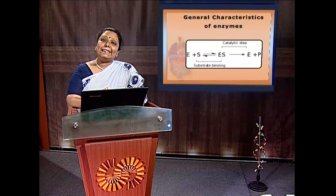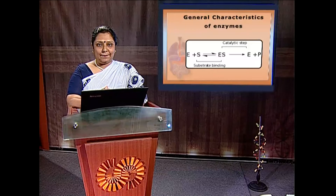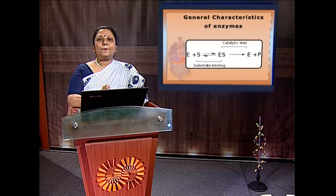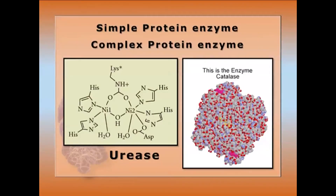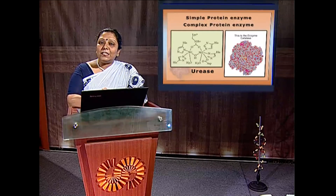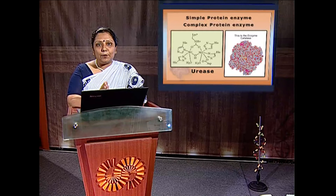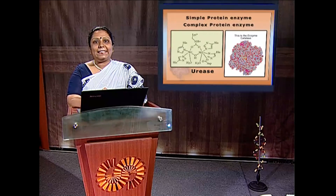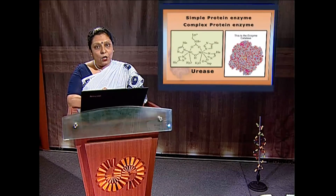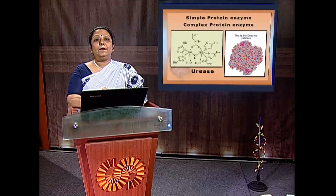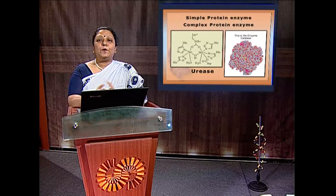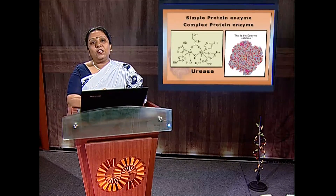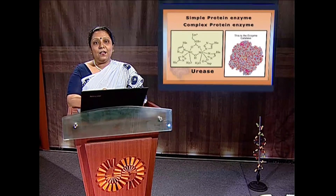Enzymes are protein in nature — they may be simple proteins like urease or complex proteins like catalase having an extra cofactor. They may be a single polypeptide chain like DNA polymerase I in E. coli, or made of different numbers of polypeptide chains as oligomeric proteins like pyruvate kinase.